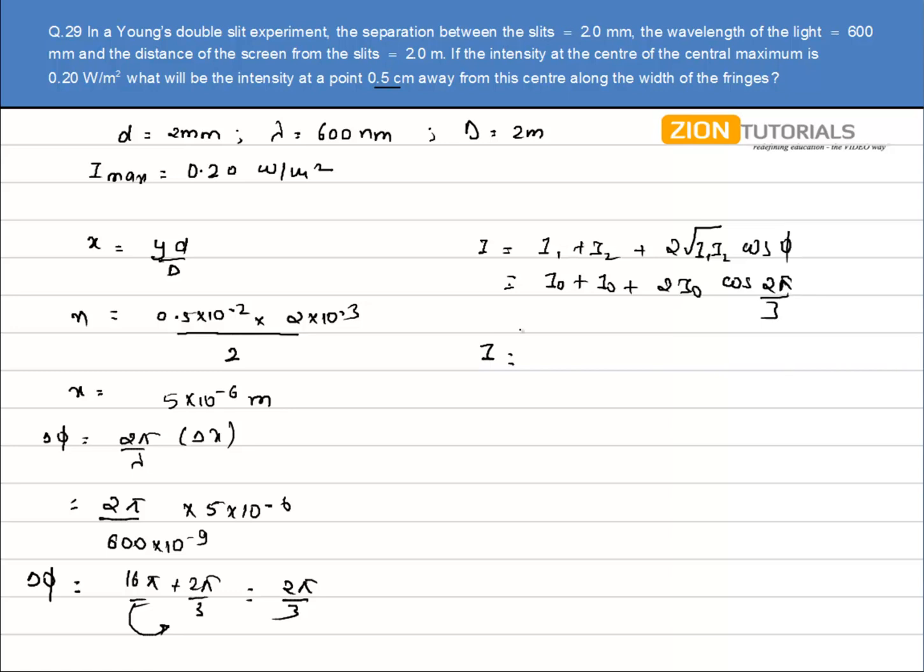So intensity comes out to be I_0. And we know that I_max is given by 0.2 watt per meter square, and that is equal to 4 times of I_0, because if I_0 is the intensity added by 2 slits, then I_maximum is given by 4 times of I_0. It can be calculated by this formula, substituting φ equal to 0, it will come out to be 4 I_0.